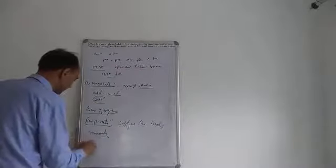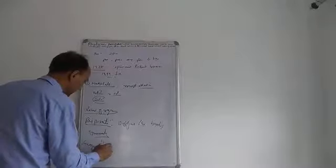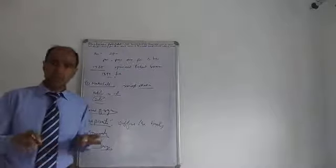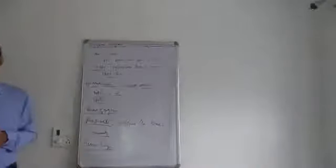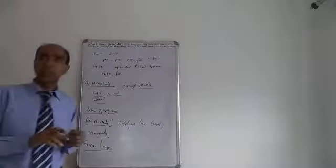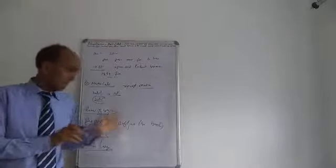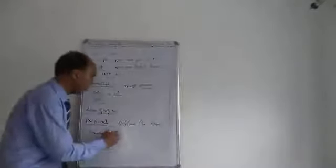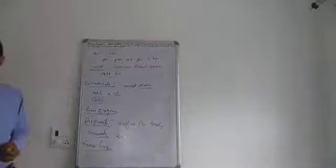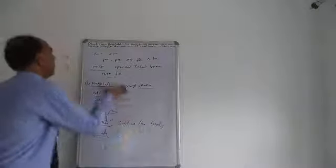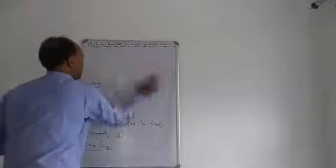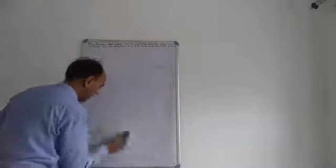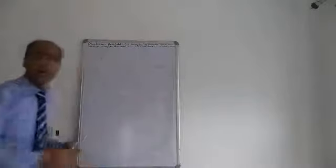Germ layers - they are diploblastic. The sponges are the first multicellular organisms that are derived from two embryonic germ layers - ectoderm and endoderm. This is another general character of Porifera.